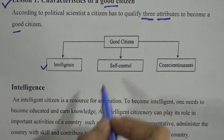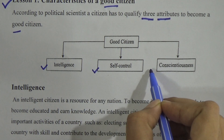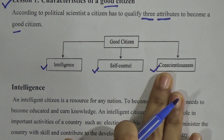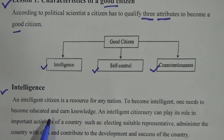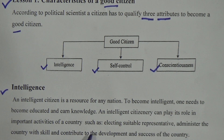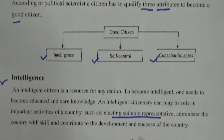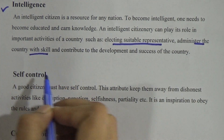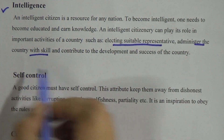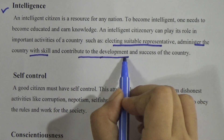Number one is intelligence, number two is self-control, and number three is conscientiousness. The first one is intelligence, and an intelligent citizen is a resource for any nation. To become intelligent, one needs to be educated and earn knowledge. An intelligent citizenry can play its role in important activities of a country, such as electing a suitable representative in elections, administering the country with skill, and contributing to the development and success of the country.